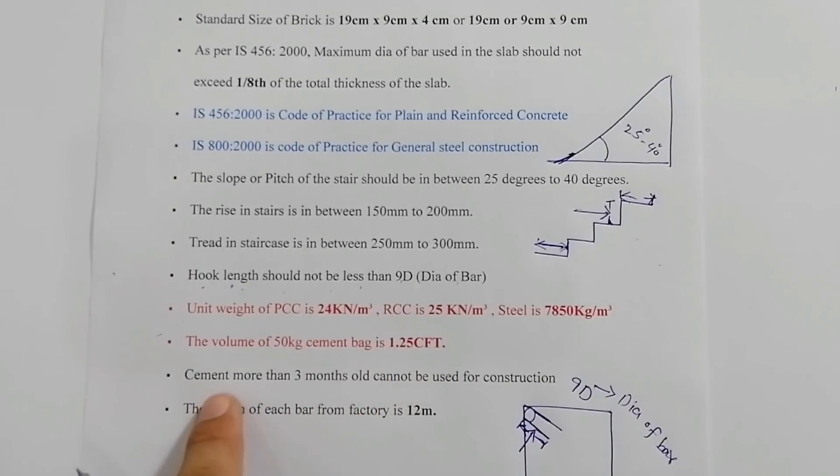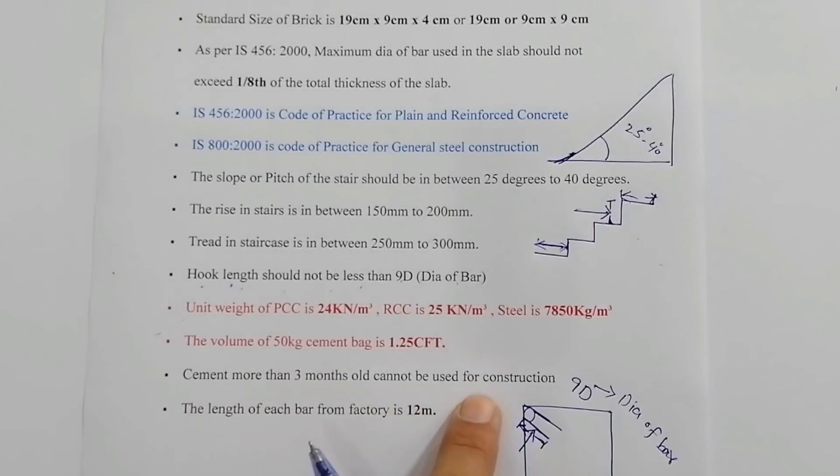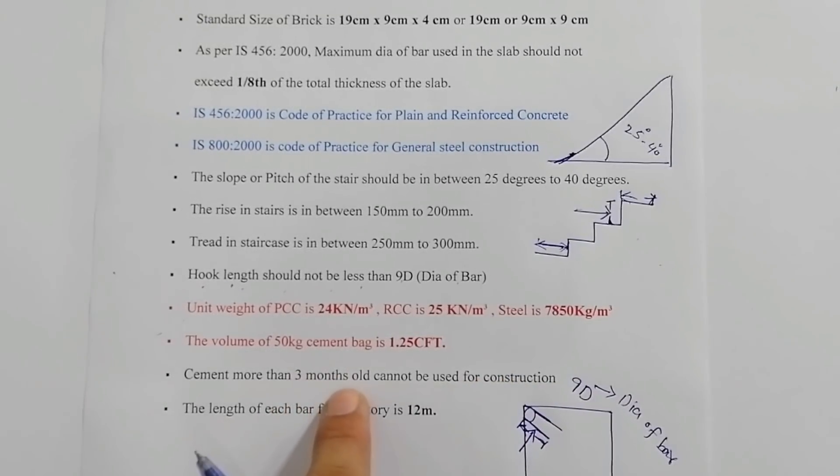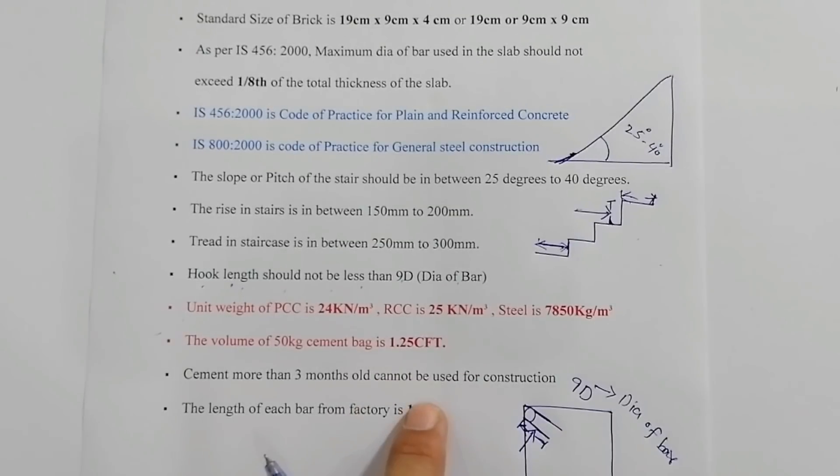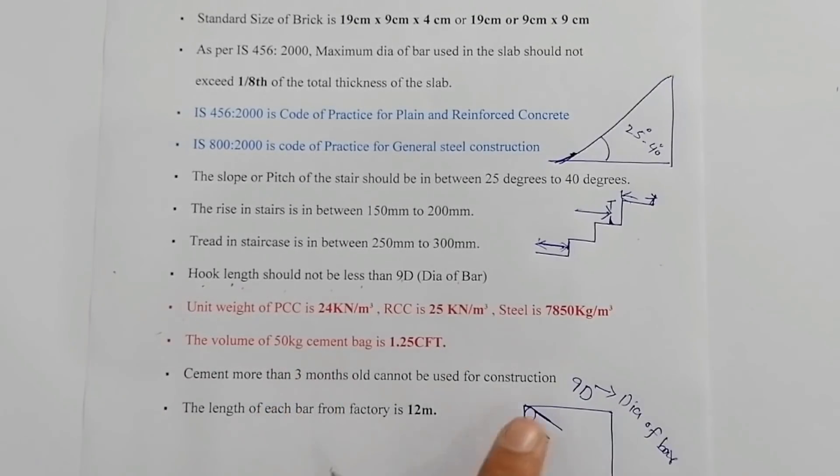Cement more than three months old cannot be used for construction. Don't use cement if its age is more than three months. Within three months you are able to use the cement for construction works. More than three months we should not use cement. It's not suitable to gain more strength.